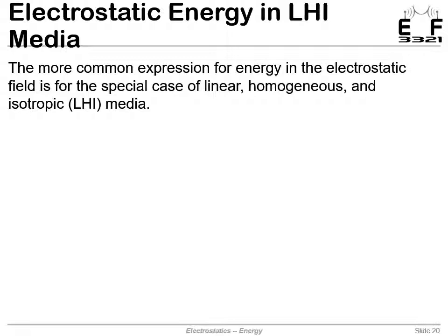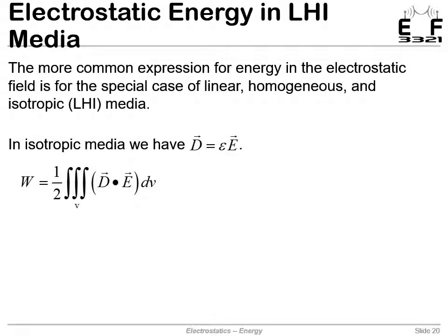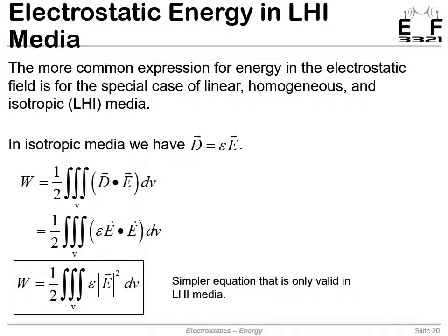There's a more common expression you do find in textbooks. If you Google this, these equations will come up. In an isotropic medium, D is simply the permittivity times the electric field. We can replace D here with epsilon E. Now we have the electric field dot producted with itself. The dot product of a vector with itself is the magnitude of that vector squared. In fact, this is the equation you'll see if you Google search for energy in the electric field. But this is only valid in linear homogeneous isotropic media. In any other case, we have to go back to the original integral which has the D dot E in it.